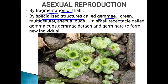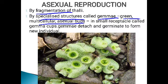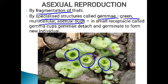They produce specialized structures called gemma (plural; singular is gemma). Gemma are green, multicellular, asexual buds. They develop in small, cup-shaped receptacles called gemma cups. You can see these gemma cups here — inside each gemma cup, the gemma are present.